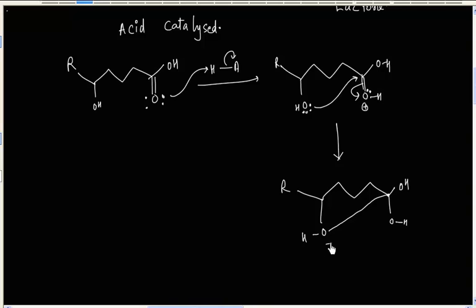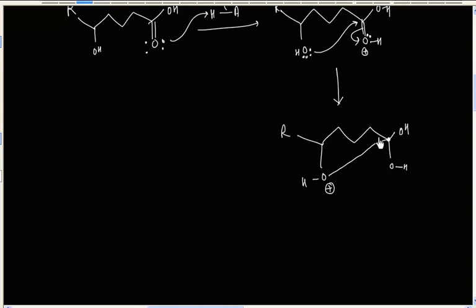Now this oxygen will have a formal charge. This oxygen is connected to this carbon. So we can show a ring. So we have a six-membered ring.